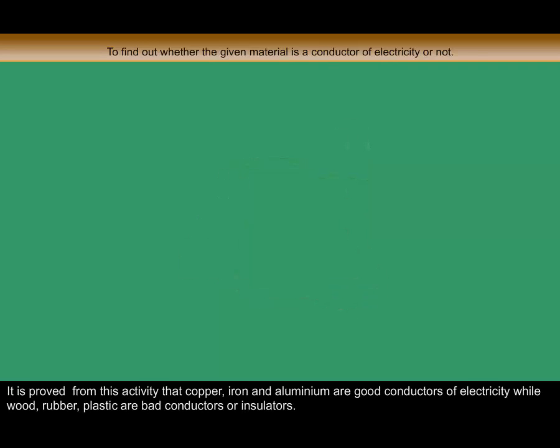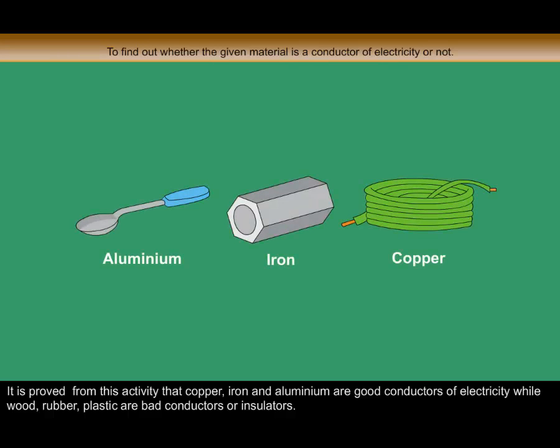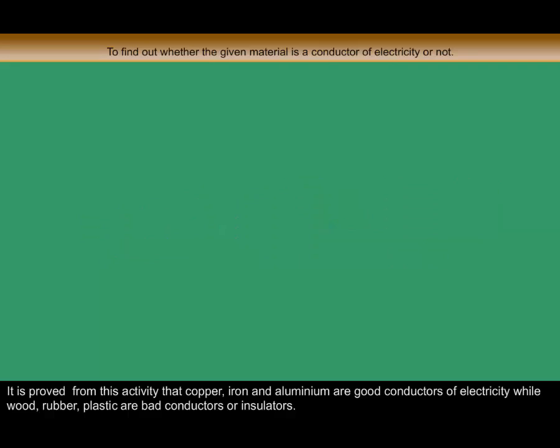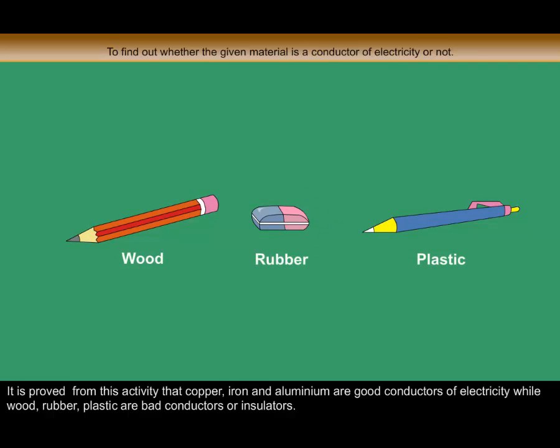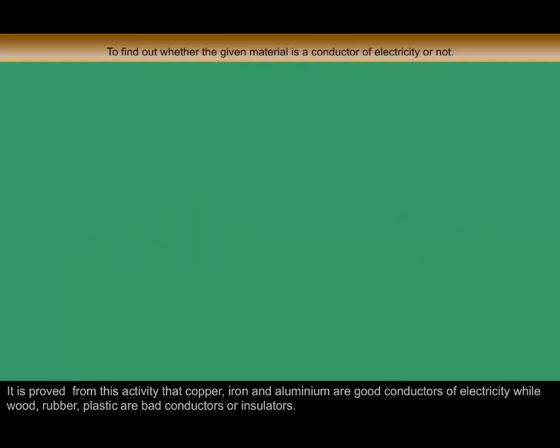It is proved from this activity that copper, iron and aluminium are good conductors of electricity, while wood, rubber and plastic are bad conductors or insulators.